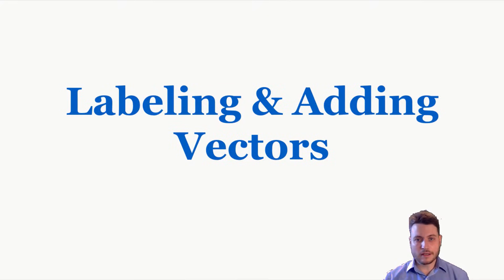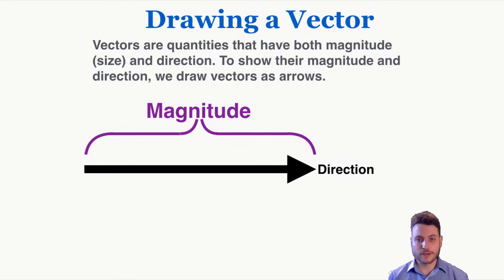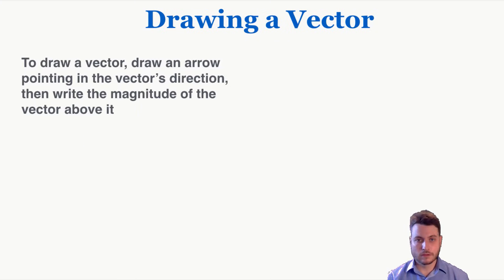This video is about labeling and adding vectors. Vectors are quantities that have both magnitude, which is just another word for size, and direction. To show their magnitude and direction we draw vectors as arrows, because arrows also can have a size and a direction. To draw a vector, just draw an arrow pointing in the vector's direction and then write the magnitude of the vector above it.